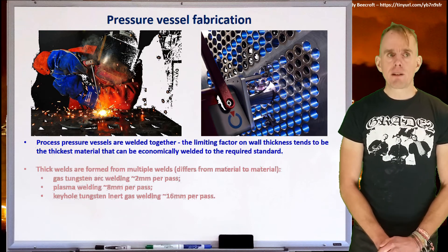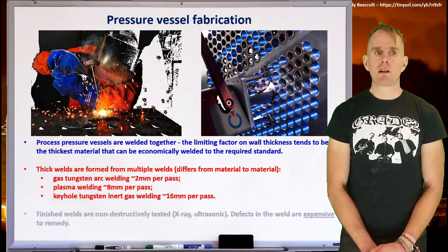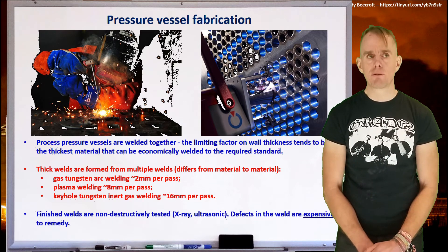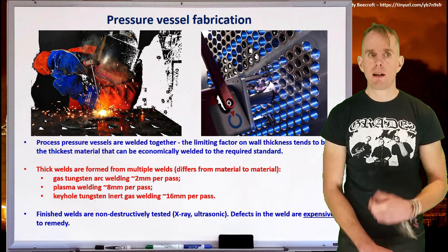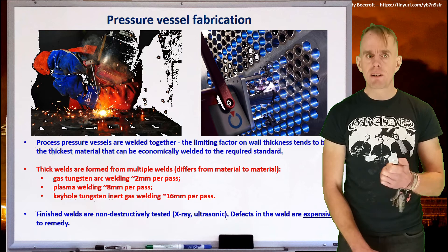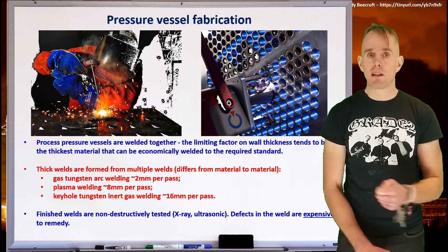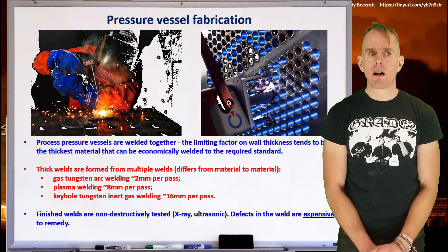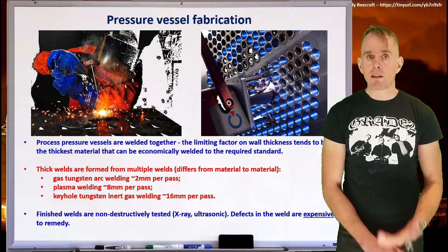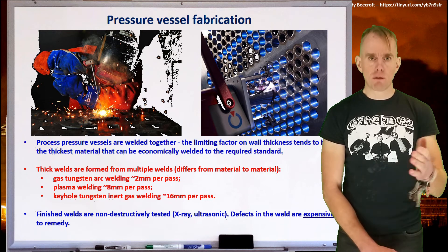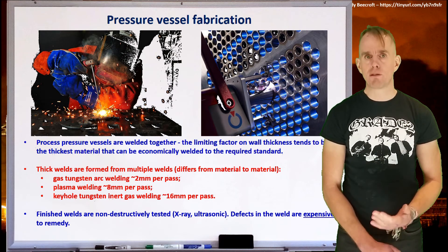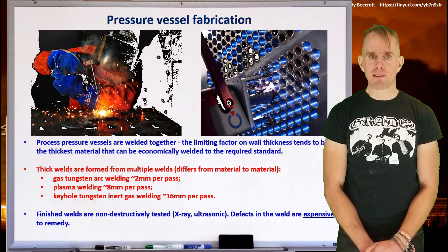Of course, there are various different types of welding technique. And so if we think about wall thicknesses and material thicknesses, you'll find gas tungsten arc welding is good for about 2mm of thickness. Plasma welding, about 8mm of thickness. And keyhole tungsten inert gas welding may be up to 16mm. Now, these finished welds are non-destructively tested by x-ray or by ultrasound. And if the weld is found to be defective, then it is ground away and the welding process starts all over again. And this is an expensive process. So the fewer the defects, the better.